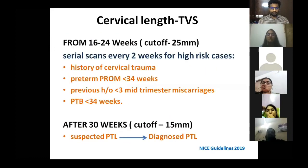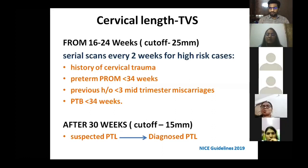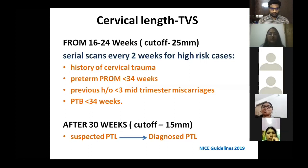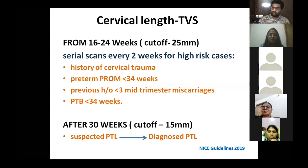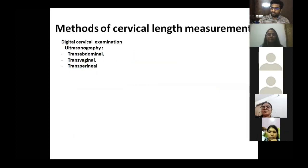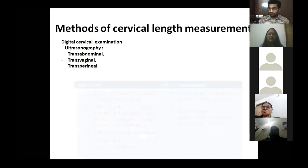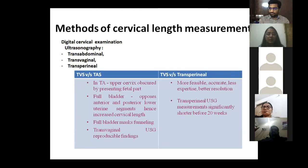From 16 to 24 weeks, serial scans every two weeks are done if there is a history of cervical trauma, previous PPROM at less than 34 weeks, previous history of fewer than three mid-trimester miscarriages, or any preterm birth less than 34 weeks. After 30 weeks, cervical length assessment is done when preterm labor is suspected. If cervical length is less than 15 mm, it is diagnosed preterm labor.